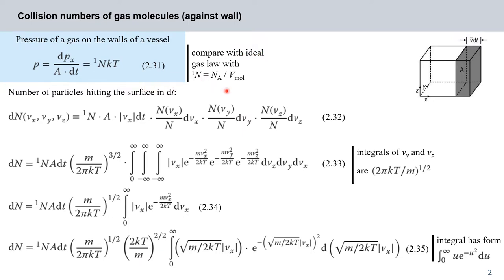This is essentially equivalent to the ideal gas law, with the number density of particles equal to Avogadro's number divided by the molar volume. So now in the time dt we have particles hitting the surface A from directions vx, vy, and vz. So dn is dependent on vx, vy, and vz, since we're now moving in three-dimensional space.